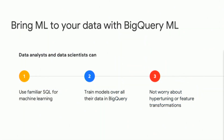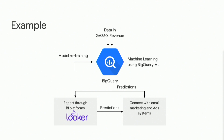What we want to do is use familiar SQL language, something every data analyst or data scientist is used to. We want to be able to train models within BigQuery without the need to take data out of the data warehouse — that's important to simplify the whole process of machine learning. Third, we don't want users to worry about things like hyperparameter tuning or feature transformations; we want all of that to be automated. For example, consider an organization with data in GA360 and some in-house revenue data.